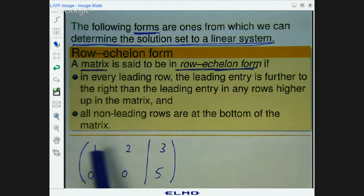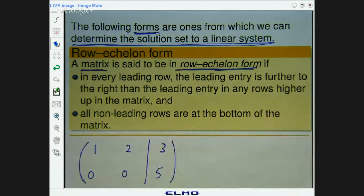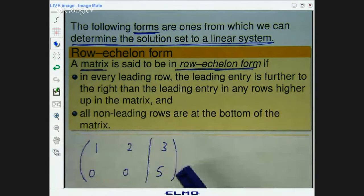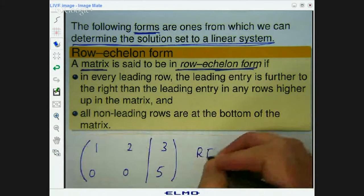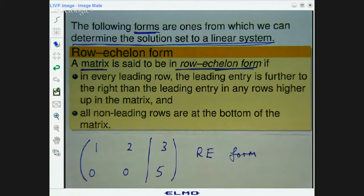So we've got the leading entry there. Okay, no problem. And then in this row, the leading entry is here. So this leading entry is further to the right than this leading entry. So we go down, the leading entries sort of go down diagonally. So this is in row echelon form.